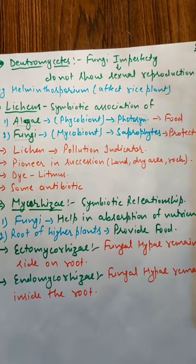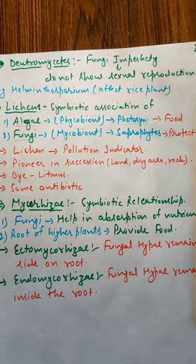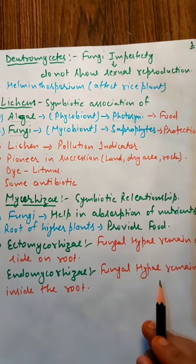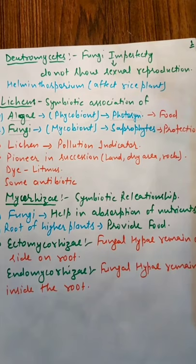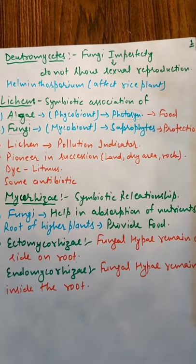Mycorrhizae are of two types. Ectomycorrhizae, where fungal hyphae remain outside of the root. Most of their hyphae, of the fungus, are present on the outer side of the root. That is why it is called ectomycorrhizae. And second is endomycorrhizae. In this, fungal hyphae remain inside the root. They stay inside the root.